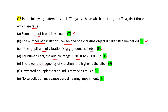Fifth: the lower the frequency of vibration, the higher is the pitch — this is a wrong statement. If frequency is lower then pitch is also lower — so F. Sixth: unwanted or unpleasant sound is termed as music — wrong statement; unwanted or unpleasant sound is termed as noise — so F. Seventh: noise pollution may cause partial hearing impairment — this is a correct statement, so T.